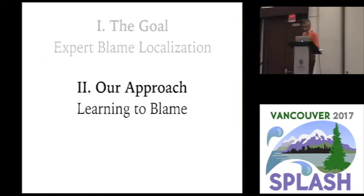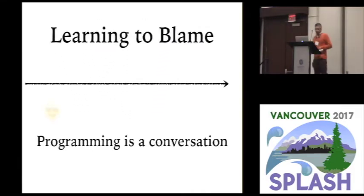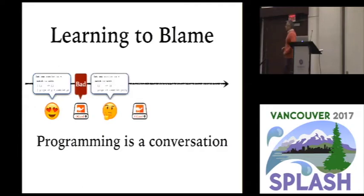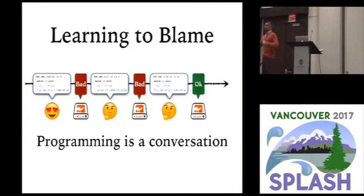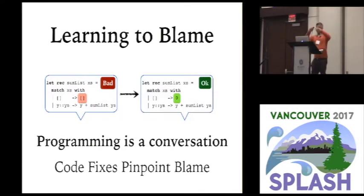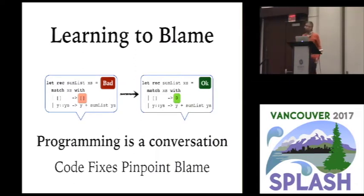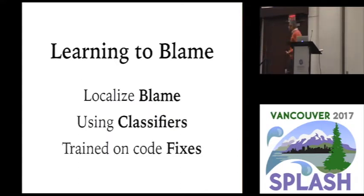So what is our approach? We want to learn over time to pinpoint error locations better. My view is that we should not think of reporting errors as a one-off thing. Programming is a conversation: you write a program, the compiler says it doesn't like it, you write another program, and so on until you finally get it right. If you look at these entire interaction traces — the bad program and then its nearest fixed version — that's a very strong signal for where the real error was. The goal is: can we design better algorithms for localizing blame by using these fixes?